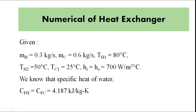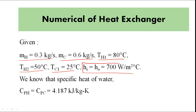What is given to us: mass flow rate of hot fluid is 0.3 kg/s, mass flow rate of cold fluid is 0.6 kg/s, inlet temperature of hot fluid is 80°C, outlet temperature of hot fluid is 50°C. The inlet and outlet temperatures of cold fluid are not fully given. H_i and H_o, the convective heat transfer coefficients at the inner and outer surfaces, are 700 W/m²°C. The specific heat of water is not given in the problem, but we know that since both fluids are water, Cp_H and Cp_C are both 4.187 kJ/kg·K.